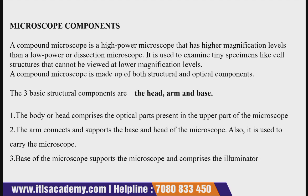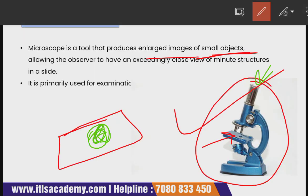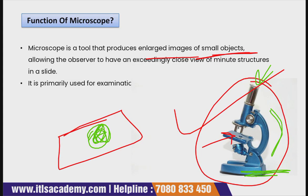A compound microscope is made up of two components: structural and optical. The three basic structural components are the head, arm, and base. The head is the upper part, the arm is the middle part, and the base is the lower part.